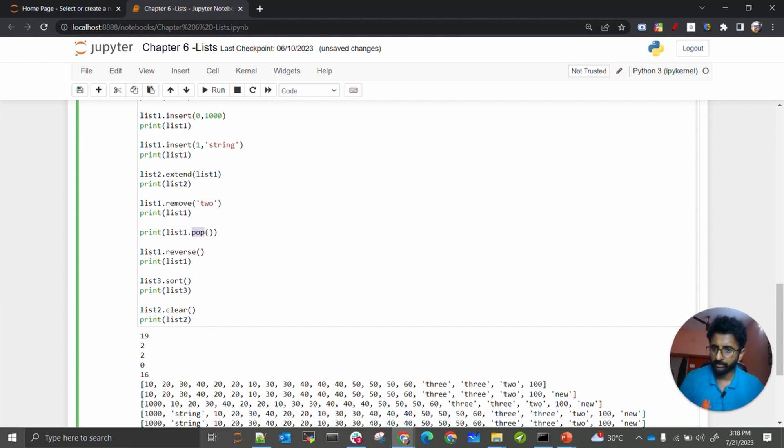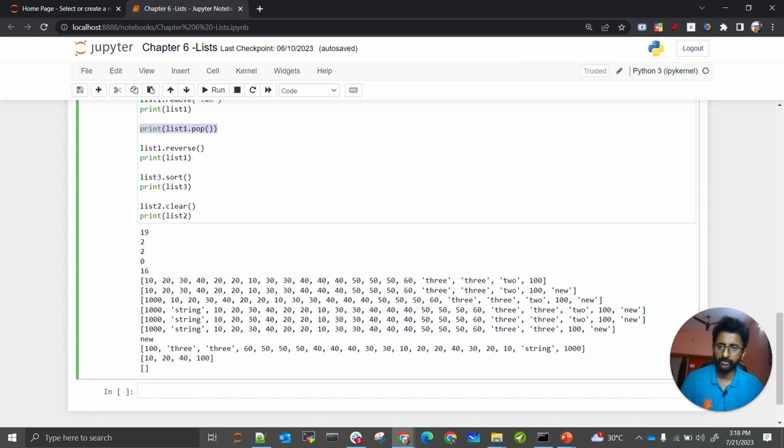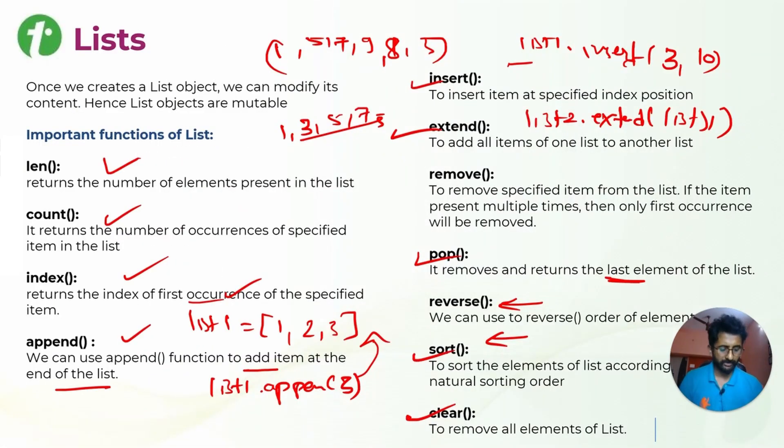Whenever you are using pop, the last element will be popped out. See, one, two, three, fourth - so the last element is new, so new one is removed. Similarly, you can reverse it, sort it, and clear it. Whenever you are clearing, it will be empty.